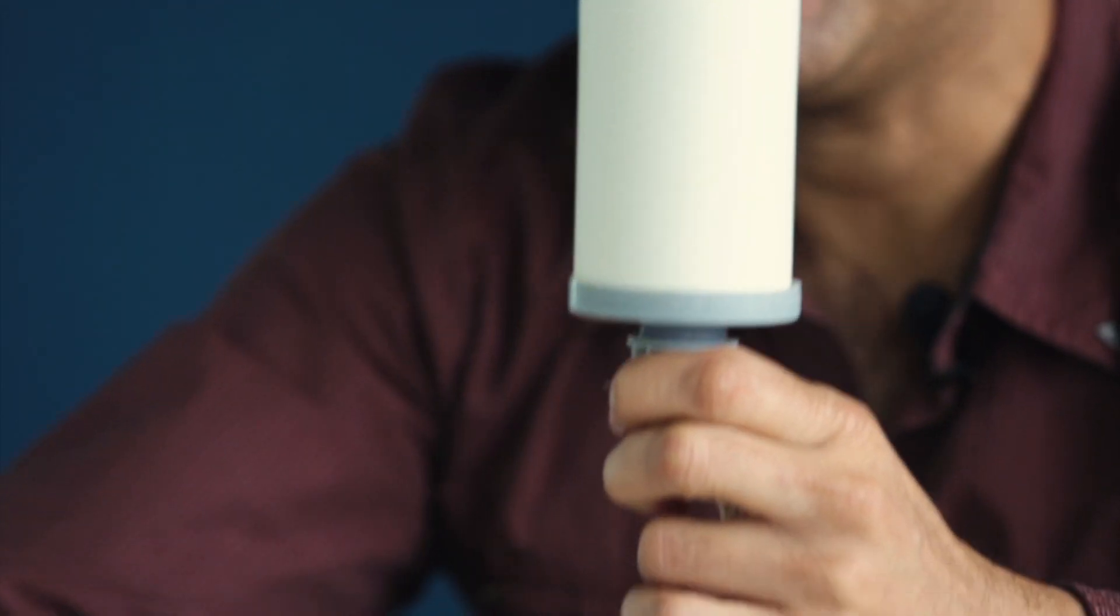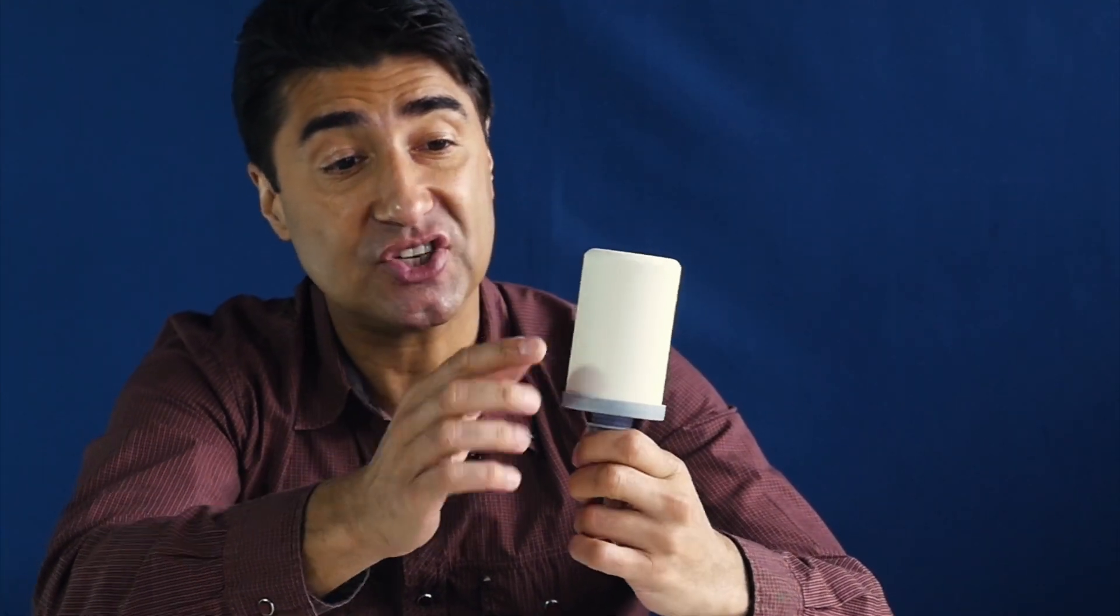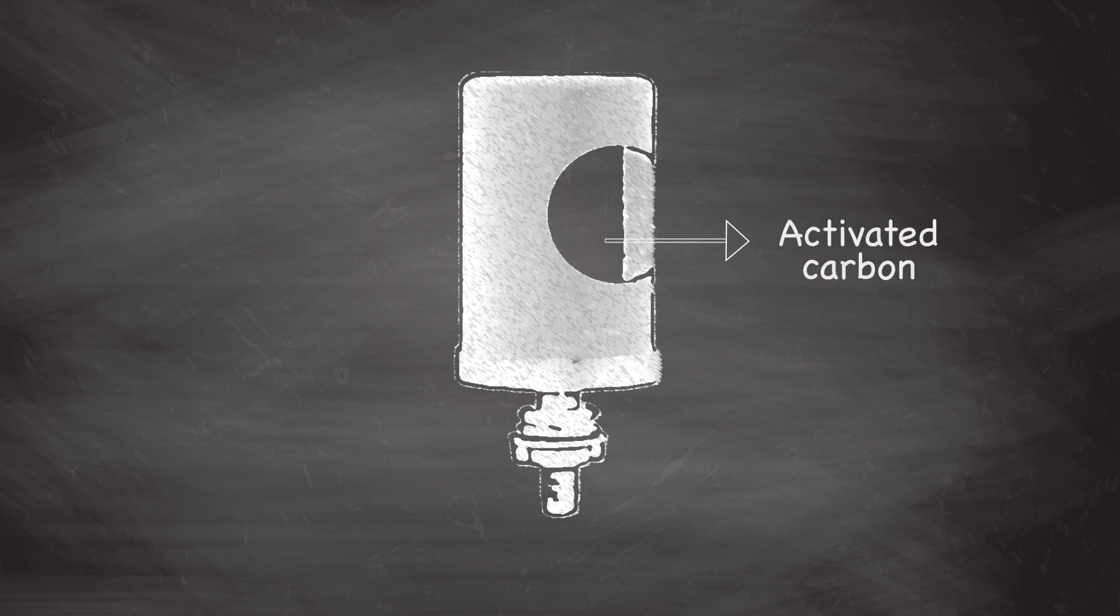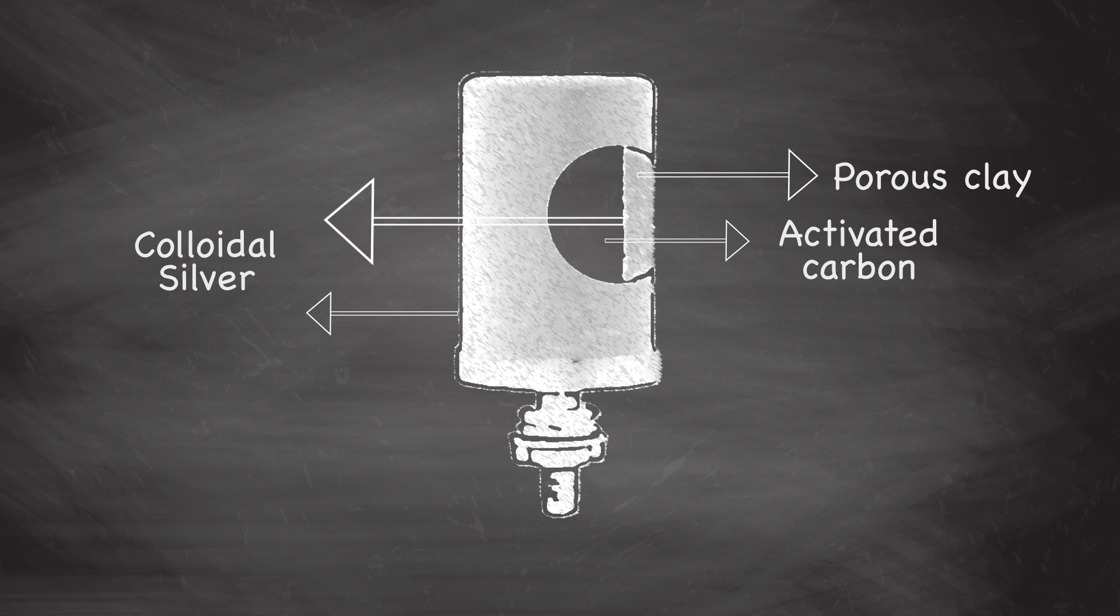A ceramic candle filter is made of, you guessed it, clay. Clay is a porous material that traps pathogens and other contaminants in the water. What's so interesting about this filter is that it's made up of different layers. Each layer is made of a different material and each material has a different function, a different job.